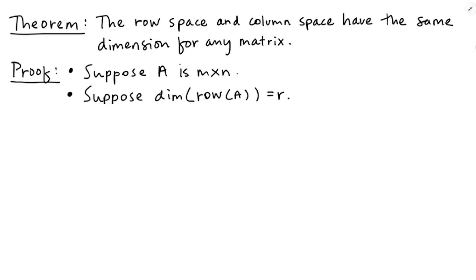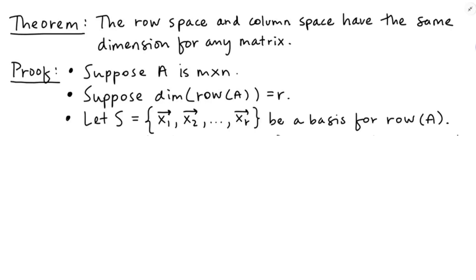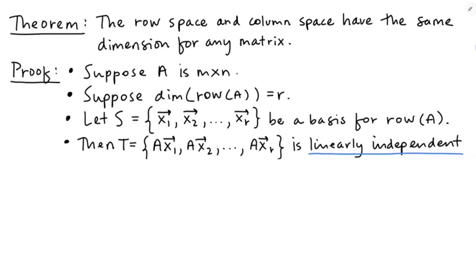So let's start by saying the row space is a subspace, so I've got to have a basis for it, and if the dimension is R there's going to be R vectors in that basis. I'll call that set S. And now I'm claiming that the set T, which is really the image of set S under the map defined by matrix A.